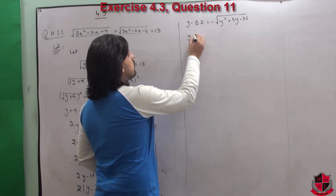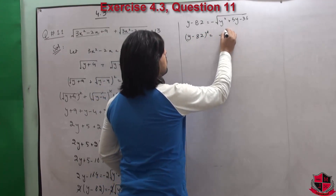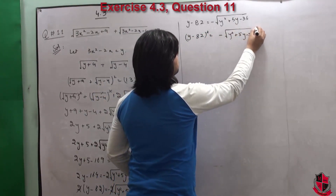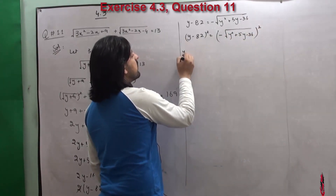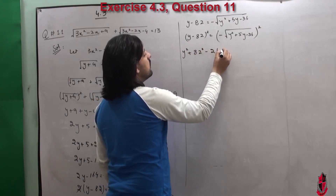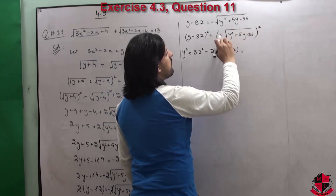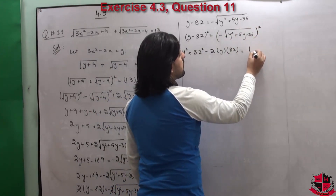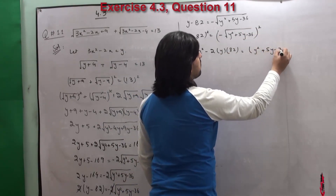(y-82)² = (-√(y²+5y-36))². Open (a-b)²: a² + b² - 2ab. The minus sign on the right becomes positive when squared, so आपके पास बचेगा: (y-82)² = y²+5y-36.